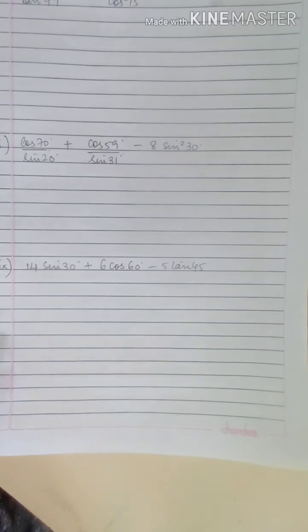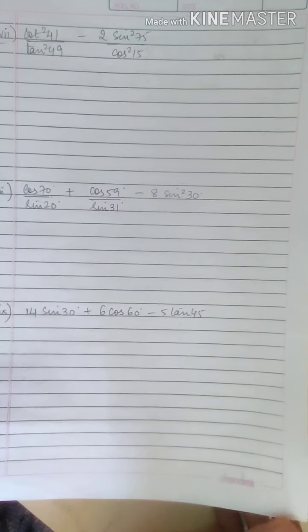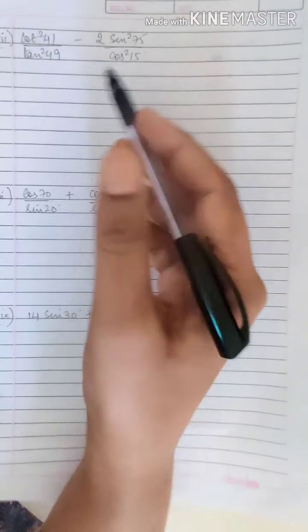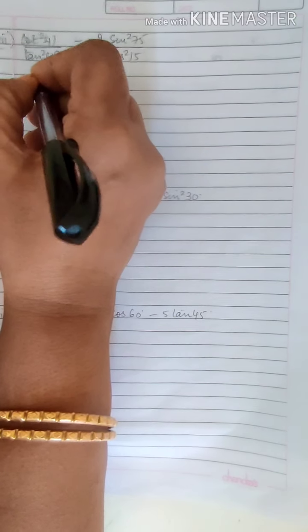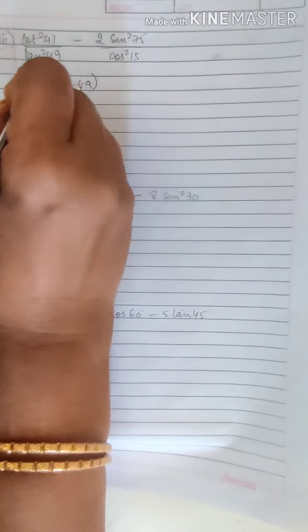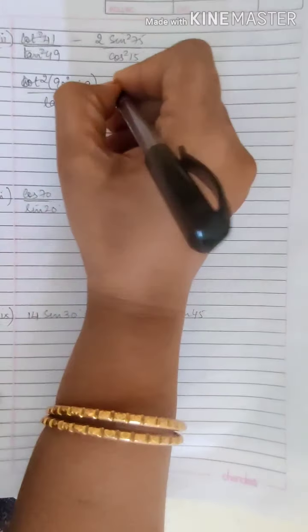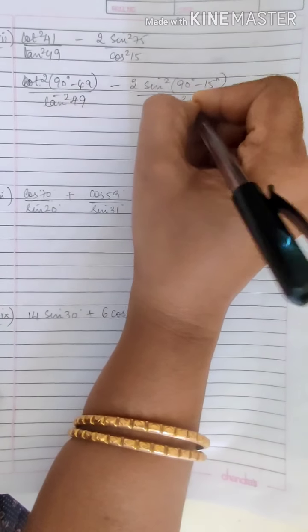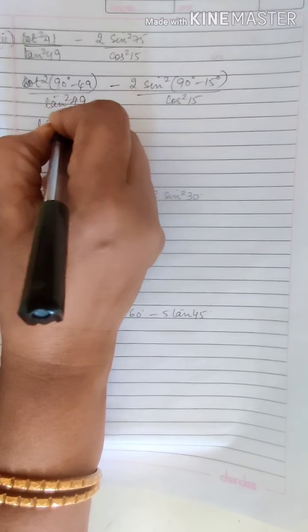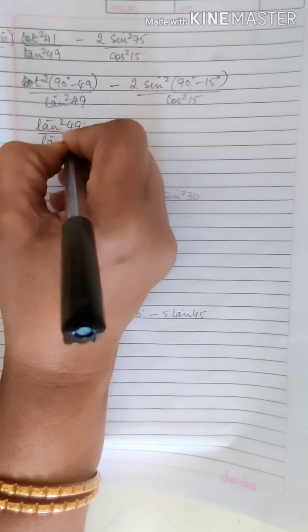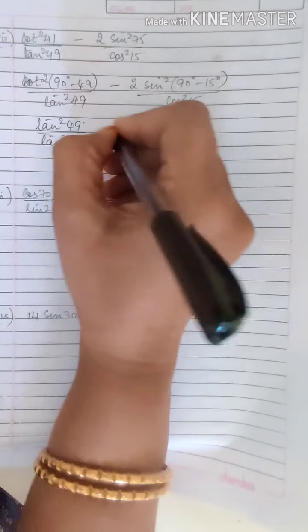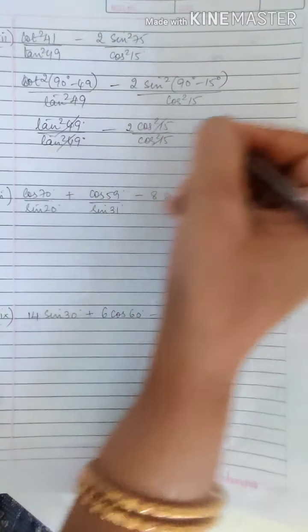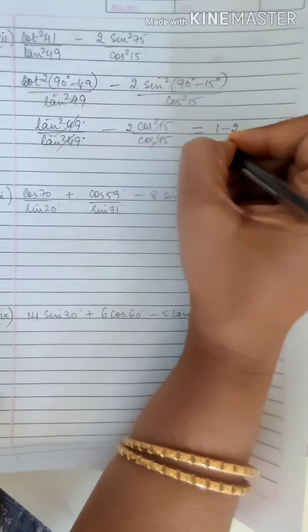Now the next one: cot² 41 / tan² 49 minus 2 sin² 75 / cos² 15. Now 41 can be written as 90 minus 49, so cot(90 minus 49) is tan 49, giving tan² 49 / tan² 49. Similarly sin 75 = sin(90 minus 15) = cos 15, so we get minus 2 cos² 15 / cos² 15. This gets cancelled and you are left with 1 minus 2 which is equal to minus 1.